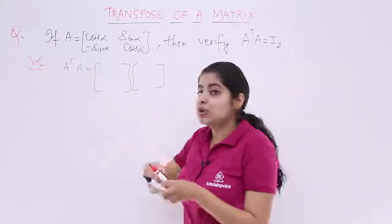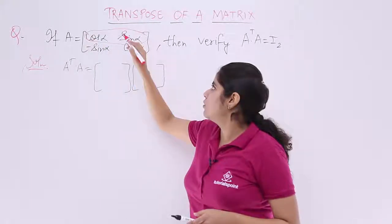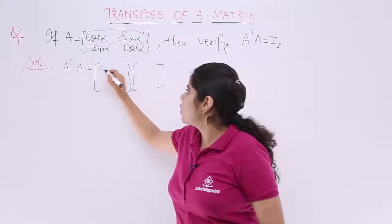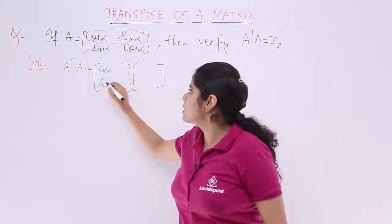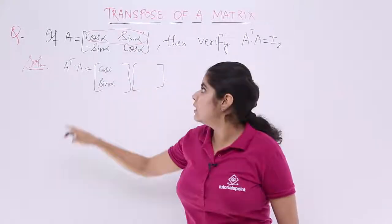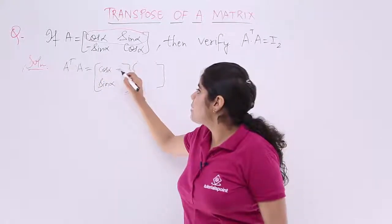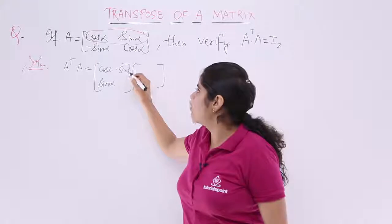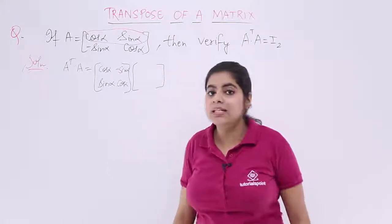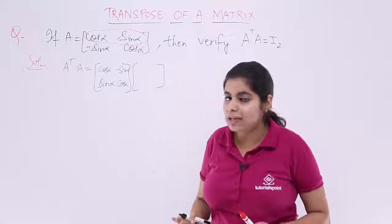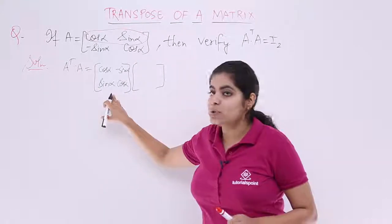So first row is what? It is cos alpha sin alpha. This is the first row. Make it as your first column. So it becomes cos alpha sin alpha. Similarly, minus sin alpha cos alpha is given to me. So it becomes minus sin alpha cos alpha. These are all placed accordingly. This is your A transpose value.